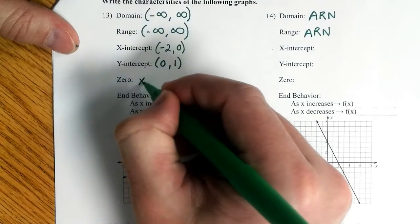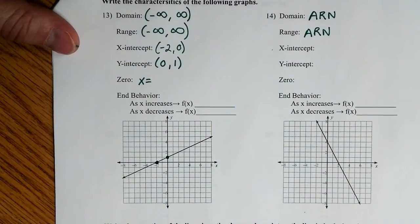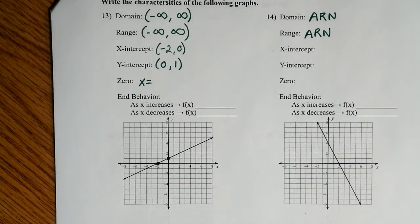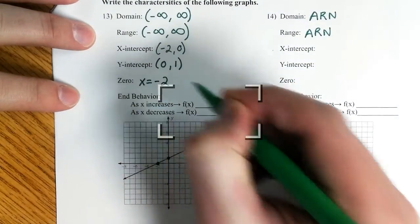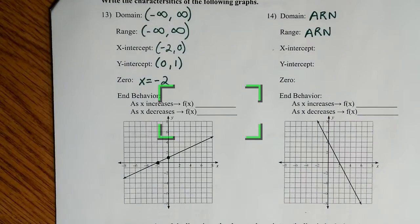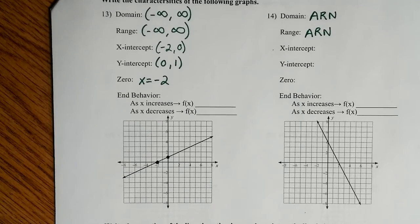What is my zero here? Your x equals... Remember, your zero is always your x-intercept. Where does it cross the x-intercept? Yeah, so x equals negative 2. Good work.